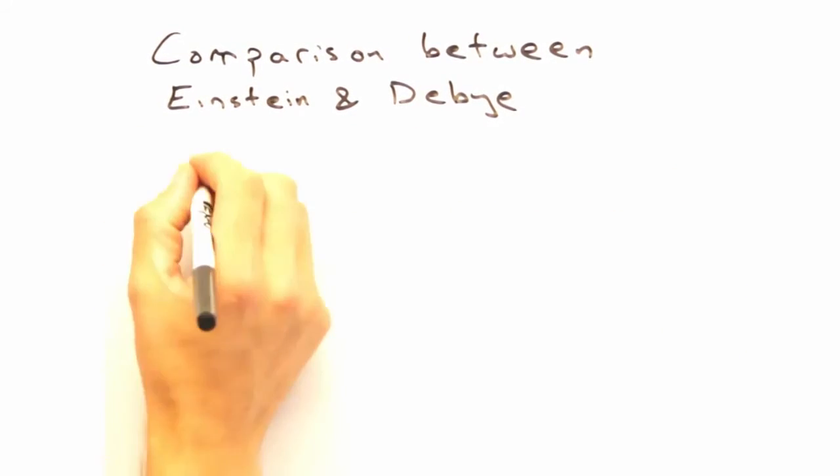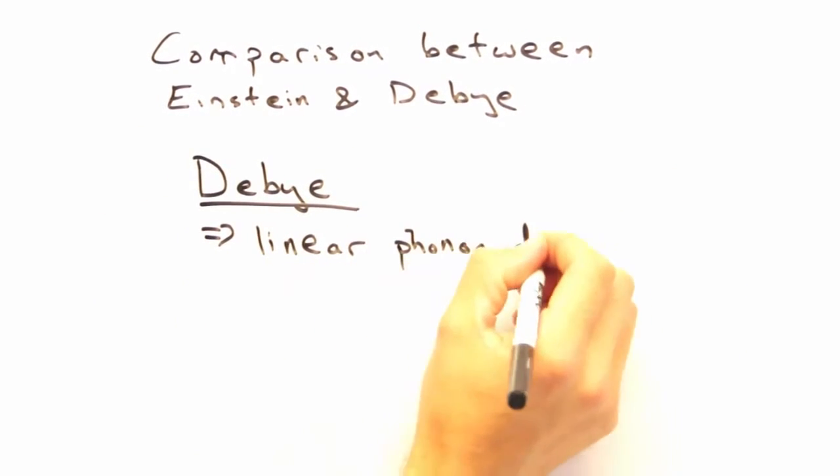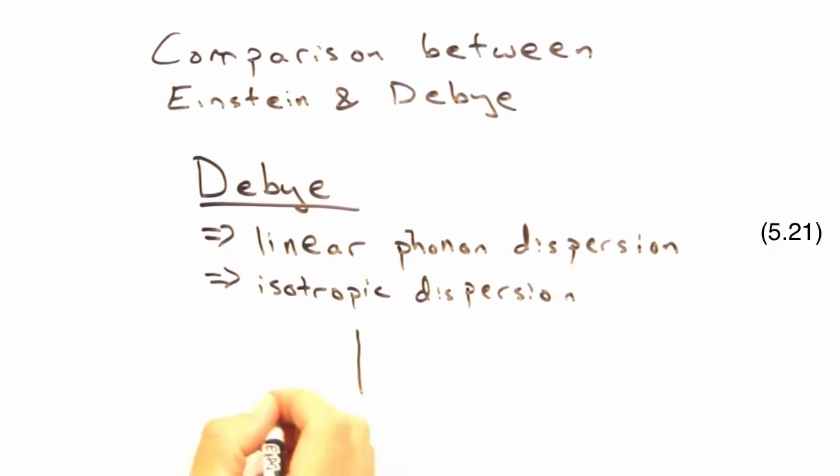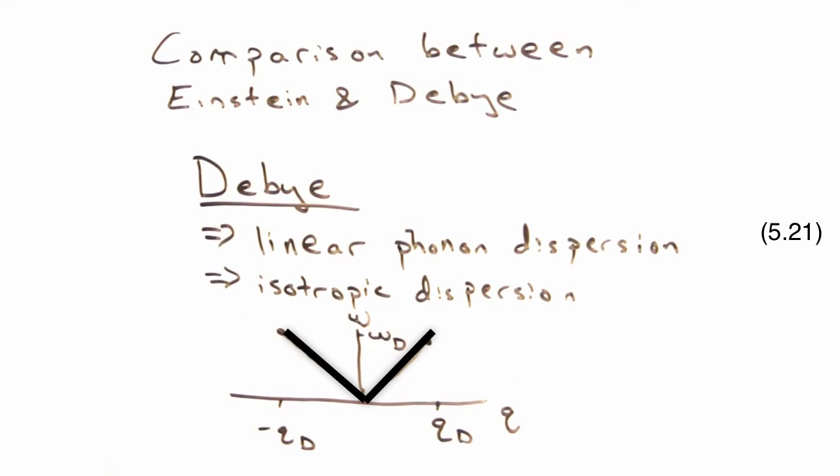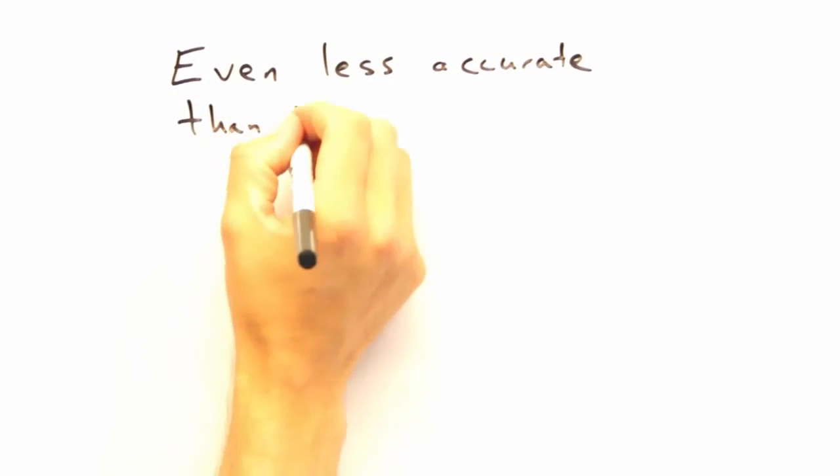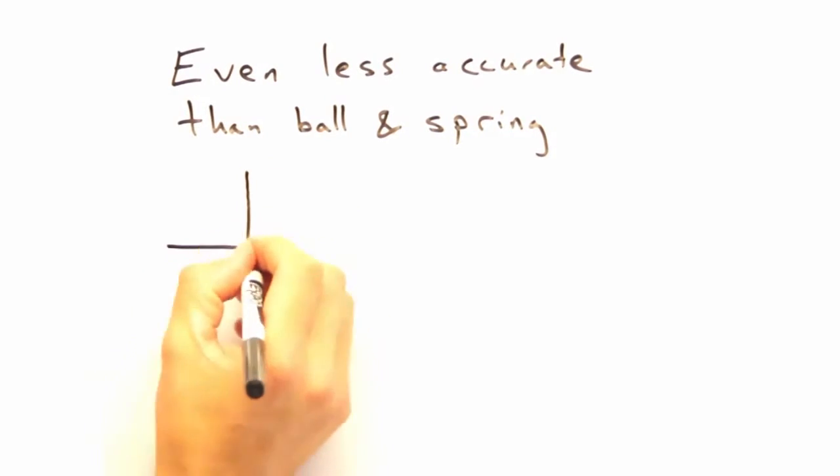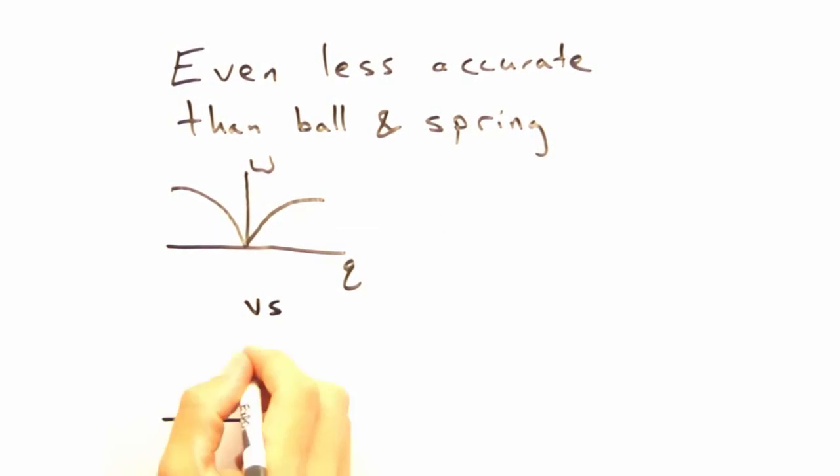With the Debye model, we'll instead invoke linear isotropic dispersion. In this case, we can plot omega versus the magnitude of our wave vector Q like this. Looks like this doesn't even capture all the details of the ball and spring model from earlier. You're right. It's still a rough approximation, but at least we now have a dispersion with multiple energies.